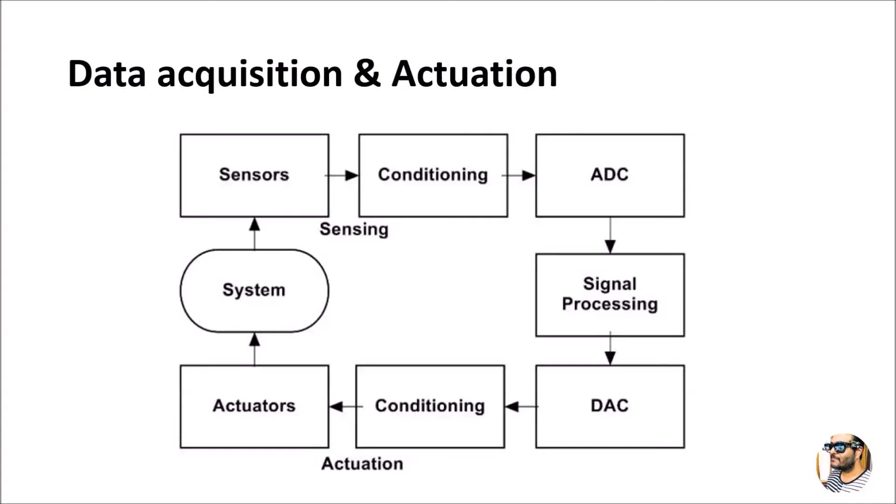The output can be in analytical, graphical, or simulation form. The process keeps on repeating — starting from the sensors, through conditioning, analog-to-digital conversion, signal processing, digital-to-analog conversion, conditioning, and actuators to produce output. This cycle is continuously analyzed through a system. The DAC, conditioning, and actuators together come under the actuation mechanism. Sensing and actuation combined perform work for particular applications.